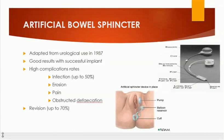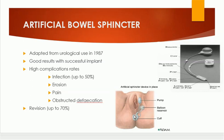Artificial bowel sphincters are also available, adapted from urological uses. They provide good results with successful implants, but have a high complication rate because of their foreign body nature — complications include infection, erosion, pain, and obstructed defecation. Here you can see the artificial bowel sphincter, which consists of a cuff around the anus, a pump, and a balloon reservoir.